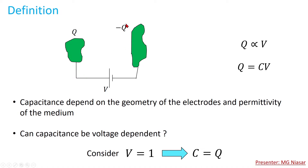This capacitance depends on the geometry of the conductors, the distance between them, and the permittivity of the material between them. Can the capacitance be voltage dependent? Yes — in some cases the permittivity of the material between the conductors is voltage dependent, so at a certain voltage there is one value of permittivity, but if you increase the voltage the permittivity changes, making the capacitance voltage dependent. But in normal cases, in the majority of situations, the capacitance is not voltage dependent.